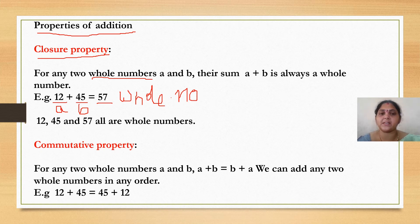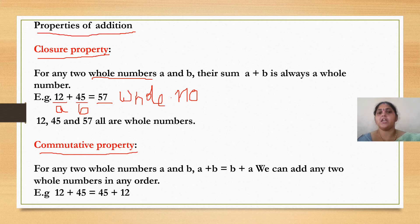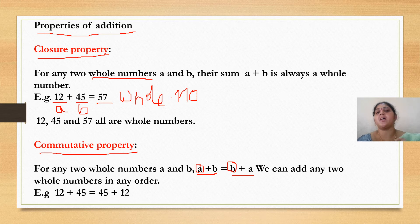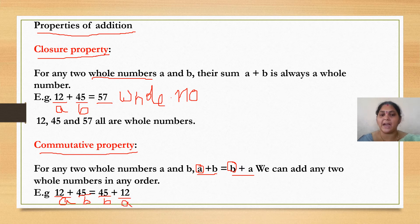The next property is commutative property. For any 2 whole numbers A and B, A plus B is equal to B plus A — we can add any 2 whole numbers in any order and get the same answer. For example, A equals 12 and B equals 45. Writing in reverse order: 45 plus 12, we still get the same answer 57. So A plus B equals B plus A — this is called the commutative property.